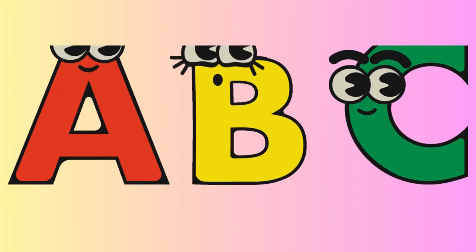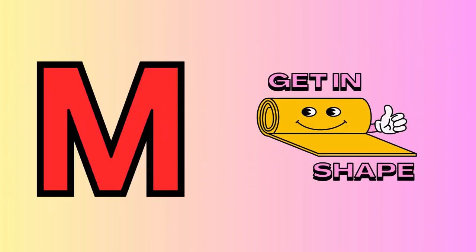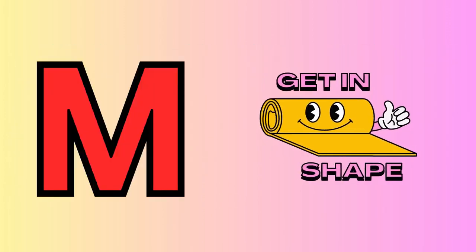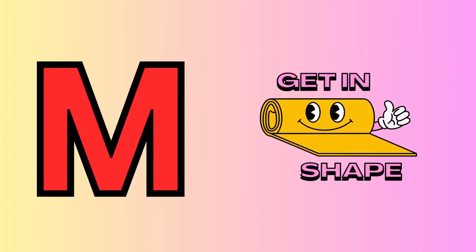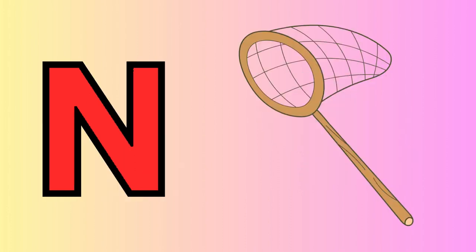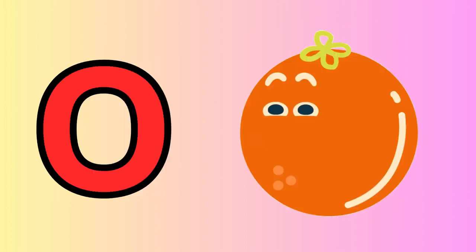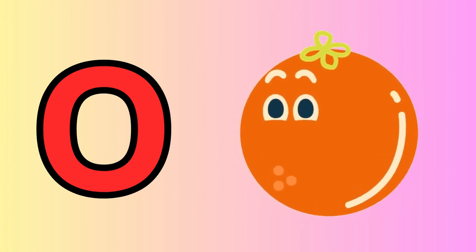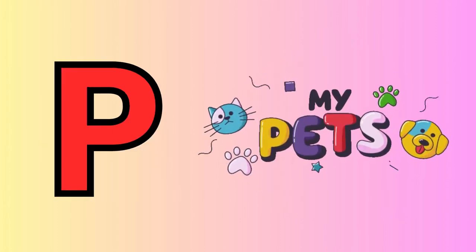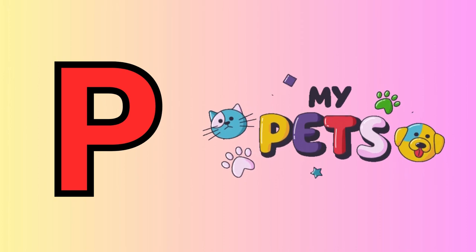M is for mat, m-m-mat. N is for net, n-n-net. O is for orange, o-o-orange. P is for pet, p-p-pet.